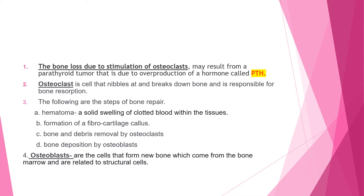Bone loss due to stimulation of osteoclasts may result from a parathyroid tumor, which is due to overproduction of a hormone called PTH, or parathyroid hormone. Number two: osteoclast is a cell that nibbles at and breaks down bone, and is responsible for bone resorption.